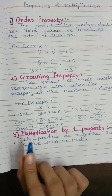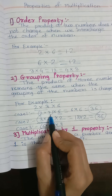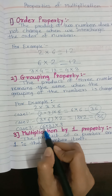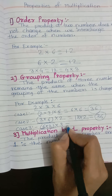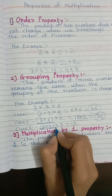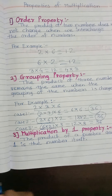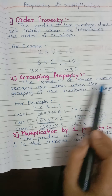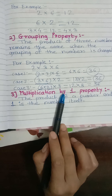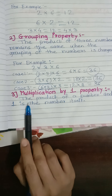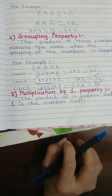Case 3: We group 6 and 2 together. The numbers are still 2, 3, and 6 — we just change the grouping. 6 multiplied by 2 is 12, and 12 multiplied by 3 is 36. So regardless of how we group the three numbers, the product remains the same. This is the grouping property of multiplication.